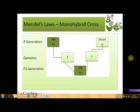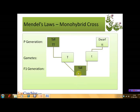Mendel experimented on a set of pure breeding plants — those plants whose characters in the second generation were consistent with those of the parents. These plants were denoted by P (parents). Their offspring were denoted by F1 (first filial generation) and the next generation as F2 (second filial generation). Mendel performed a monohybrid cross between two pure breeding plants that differed only in a single trait — one plant was tall and the other was dwarf. He found that all the F1 plants were tall.